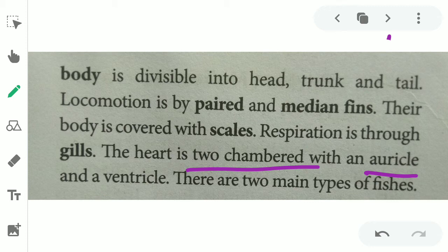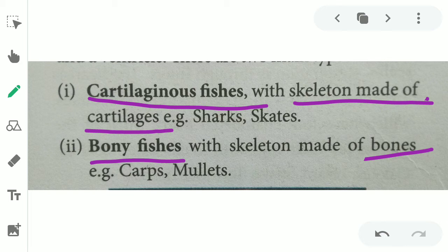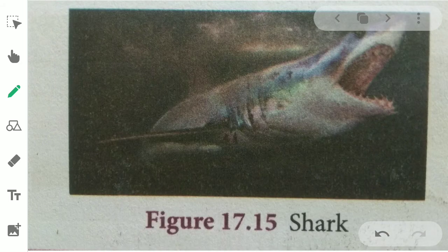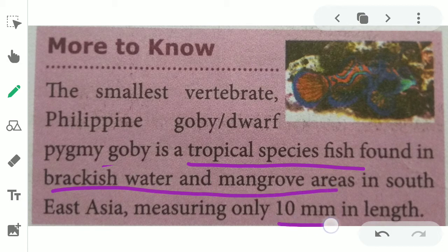There are two main types of fish: cartilage fish, with a skeleton made of cartilage — example: shark — and bony fish, with a skeleton made of bone. The smallest vertebrate in the world is the pygmy goby, found in the Philippine waters. It is a tropical fish found in brackish water, approximately 10 mm in length.